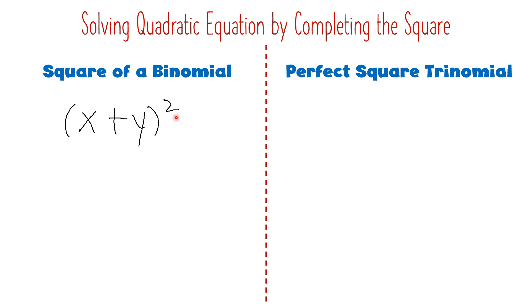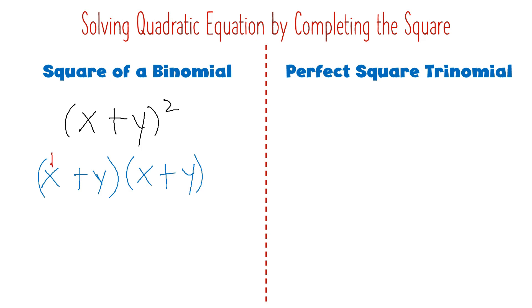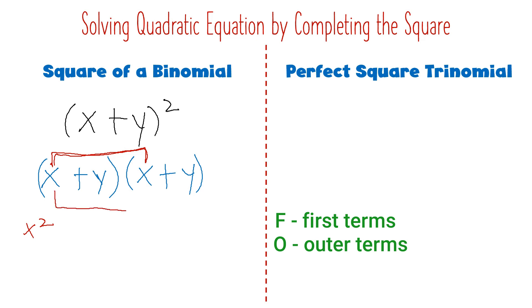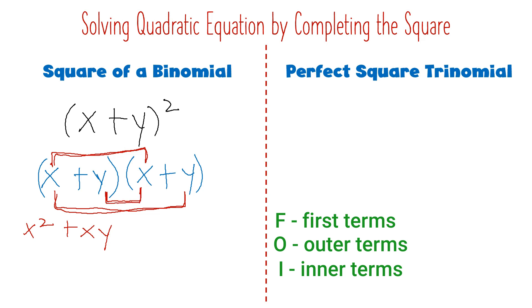When you solve for this, the result will be the perfect square trinomial. Let's solve using the FOIL method. So (x + y)² is the same as (x + y)(x + y). For FOIL, we multiply the first terms: x times x is x². Then the outer term: x times y is xy. Inner term: y times x is also xy. And the last term: y times y is y².